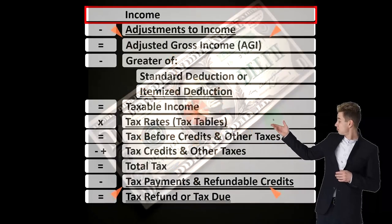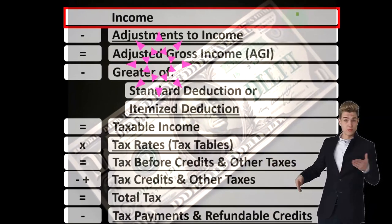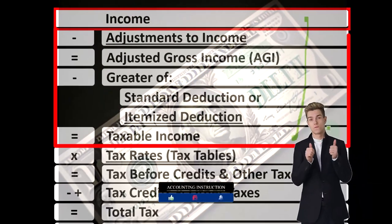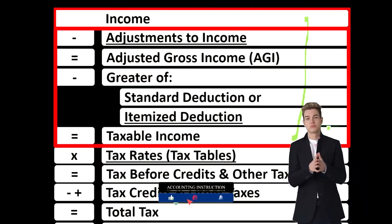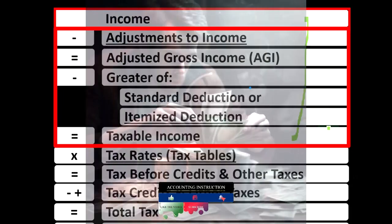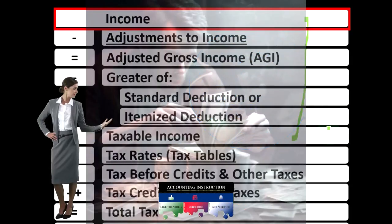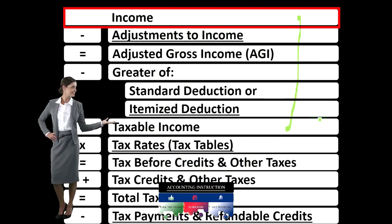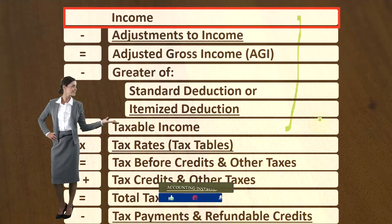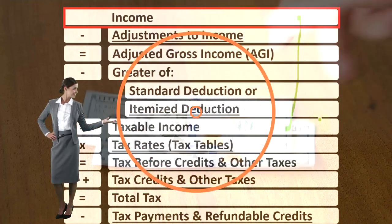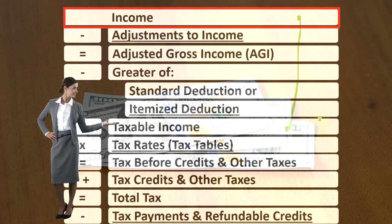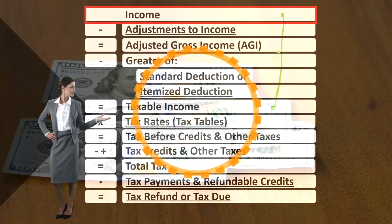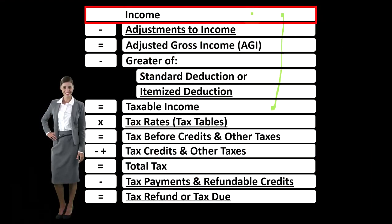Looking at the income tax formula, we're focused on line one income. The first half of the income tax formula is, in essence, an income statement — just an outline, the scaffolding — with other forms and schedules flowing into these line items, one of those being the Schedule C, which is an income statement in and of itself. It has income minus expenses or business deductions to get to net income, which rolls into line one income of the income tax formula.